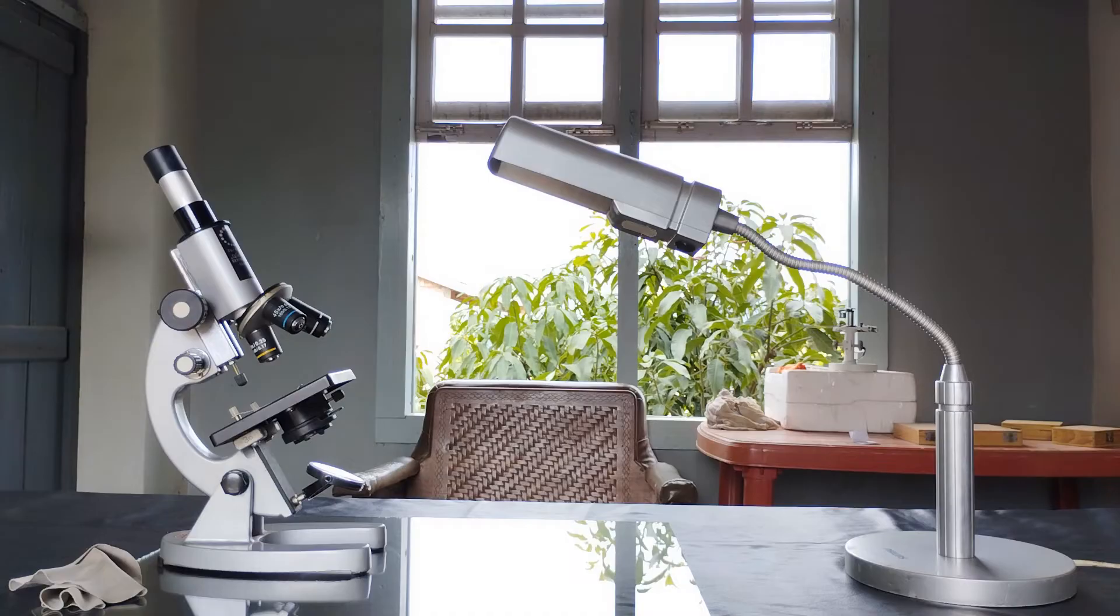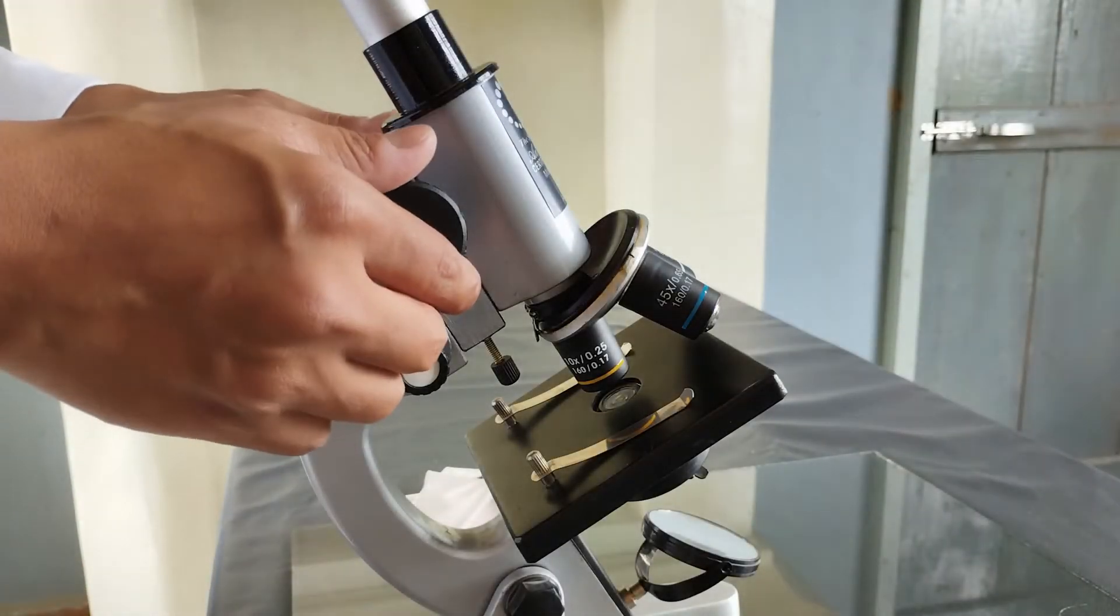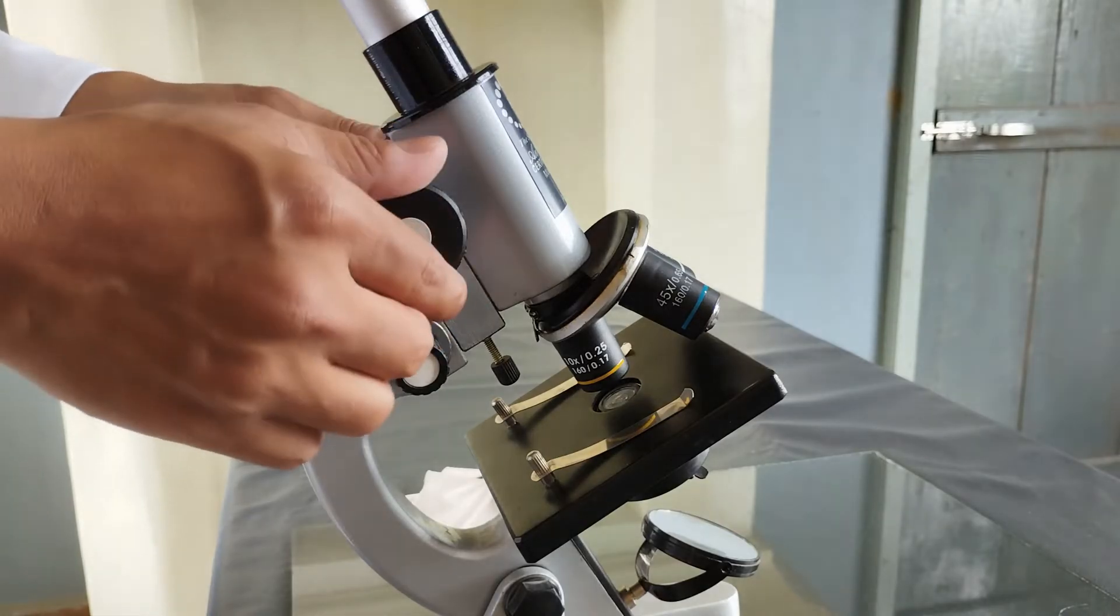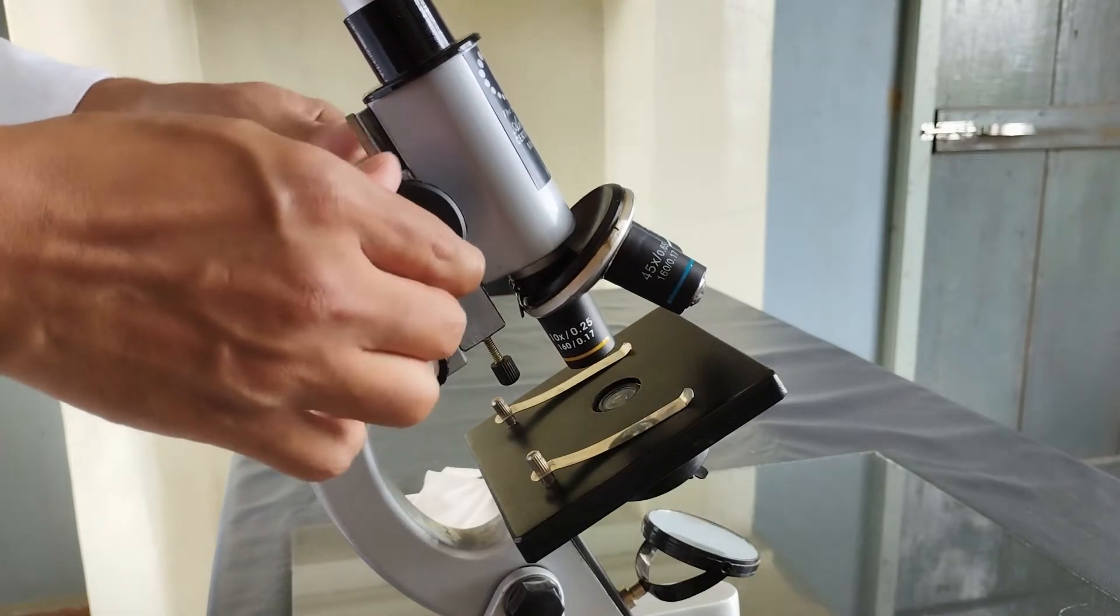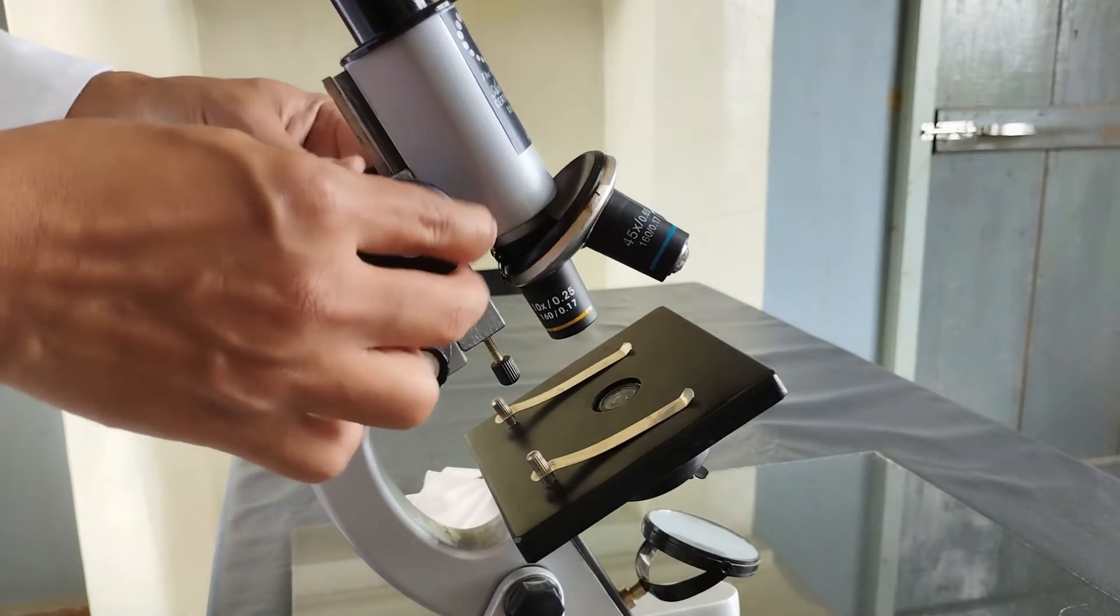The microscope is now ready to be used. For specimen viewing, first rotate the coarse adjustment knob in order to bring the objective lens to its highest or farthest possible distance from the stage.